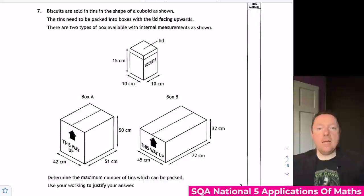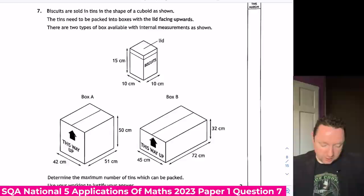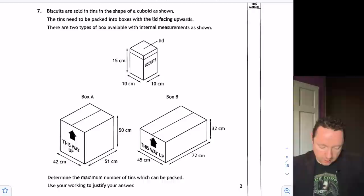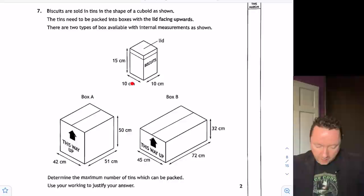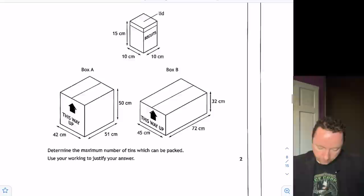National 5 Applications of Maths 2023 Paper 1 Question 7. Biscuits are sold in tins in the shape of a cuboid as shown. The tins need to be packed into boxes with the lid facing upwards. There are two types of boxes available with the dimensions shown, Box A and B. Calculate the maximum number of tins going to be packed. You're just working to justify your answer. This is actually a simplified version of box packing. In this case, since this box is the same on the length and the breadth, it doesn't matter whether I turn that around. I need to keep that lid facing up. So really all you need to do is work out how many of these go in this box and how many go into that box. And then just pick the best box. There's only one option for each.